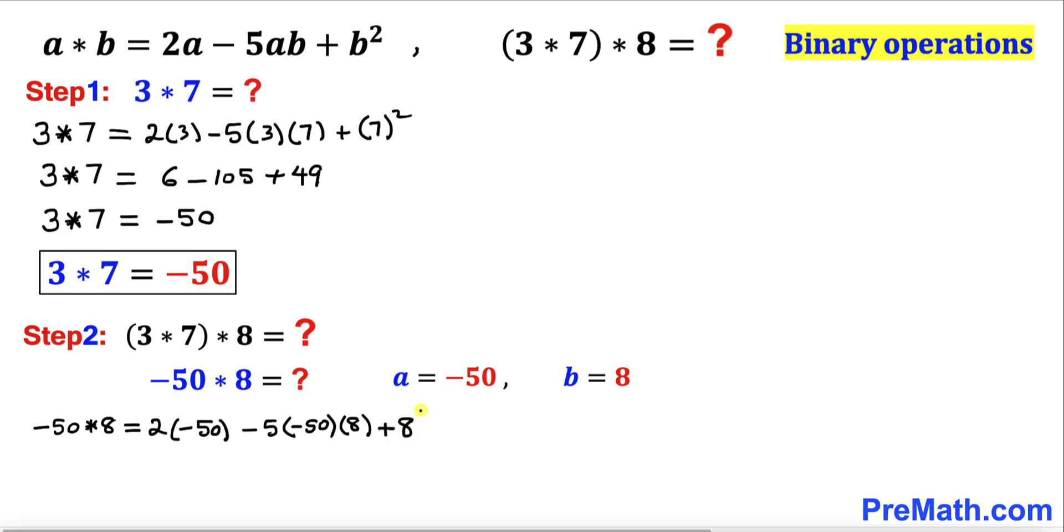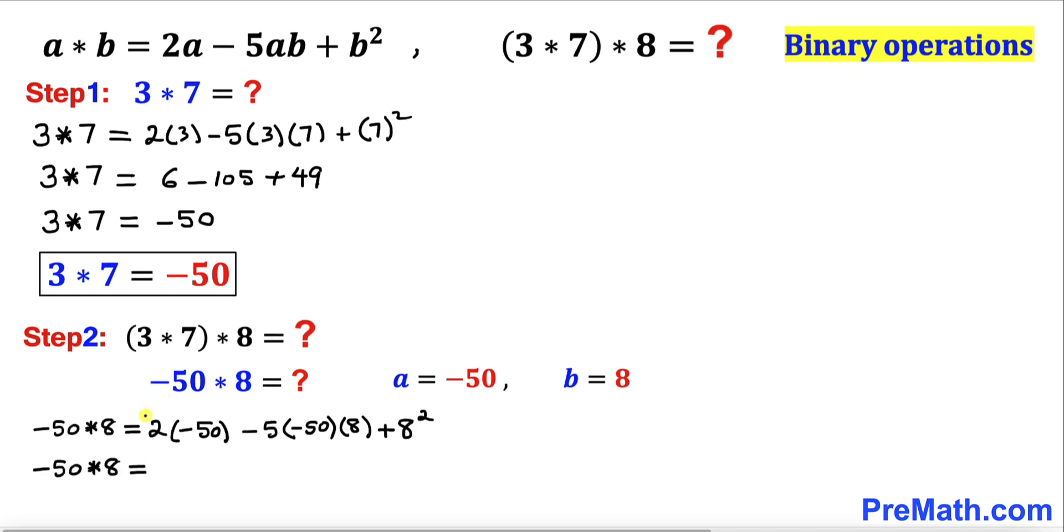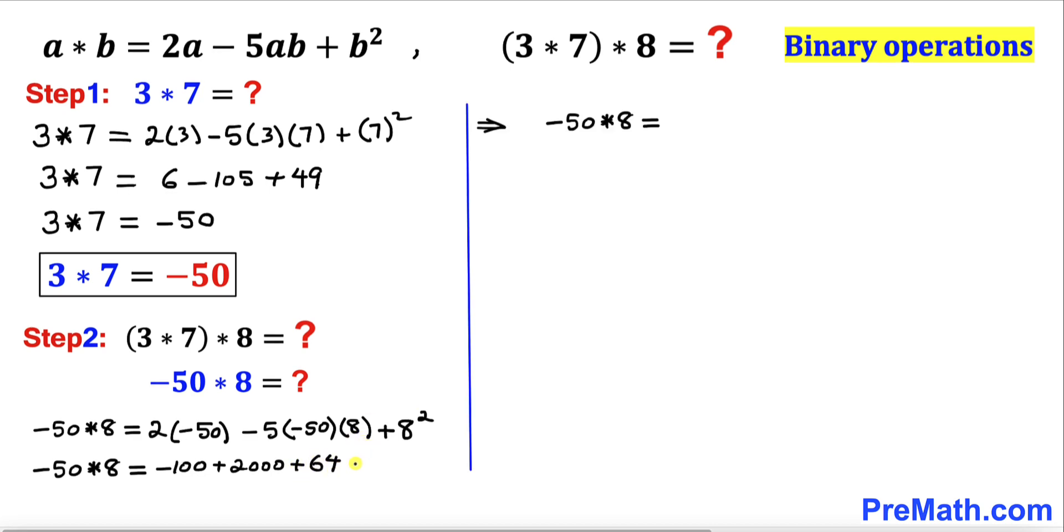Now let's go ahead and simplify the right hand side. That is going to give us negative 100 plus 2000 plus 64. And if we add and subtract on the right hand side, our negative 50 star 8 is going to be simply 1964.